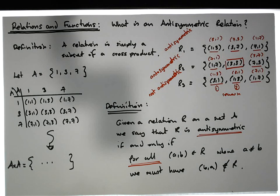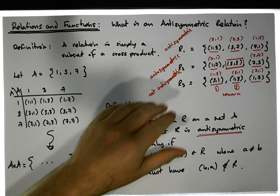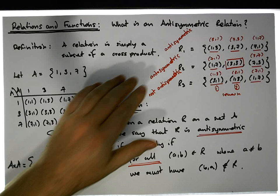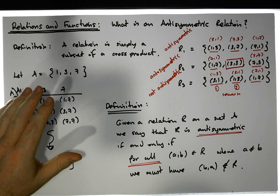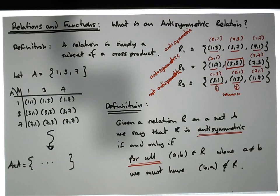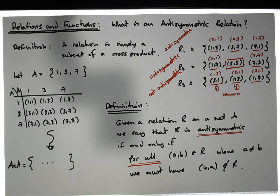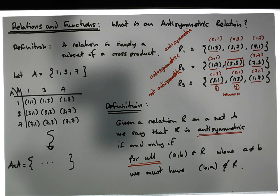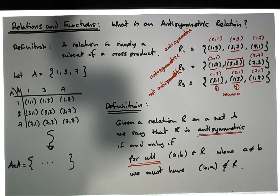So we've covered three things: symmetric relations, asymmetric relations, and anti-symmetric relations. Once again, this is Jonathan Lambert with the Mathematics Development and Support Service at National College of Ireland. I hope this video was intuitive and helpful — thanks for watching, bye bye.